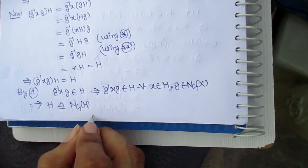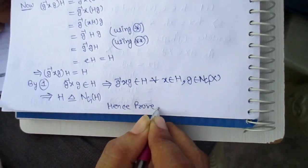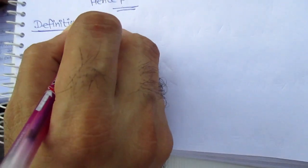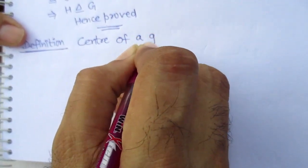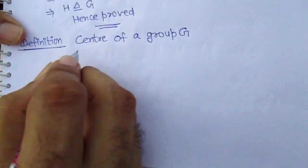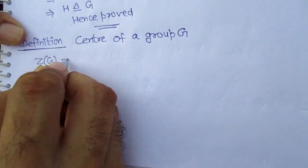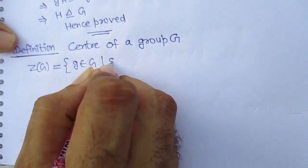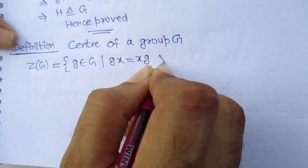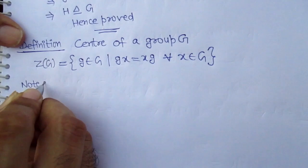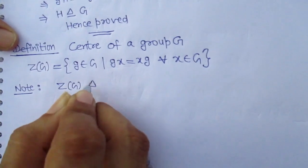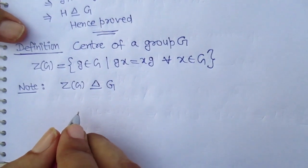Hence proved. The center of a group G, denoted Z(G), consists of those elements of G which commute with every element of G — those are the elements that come into the center of G. Note that the center of a group is a normal subgroup of G. You can easily prove that Z(G) is a normal subgroup of G.